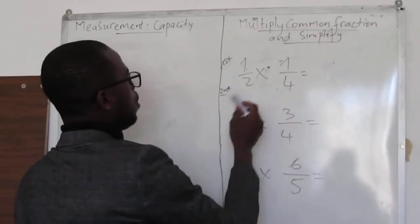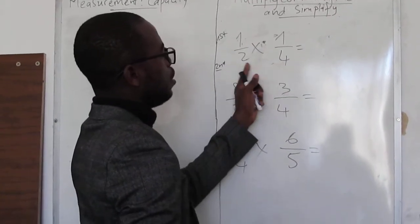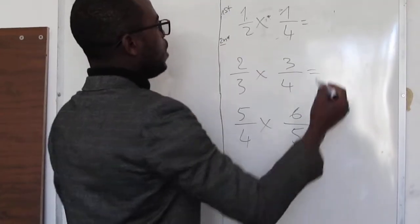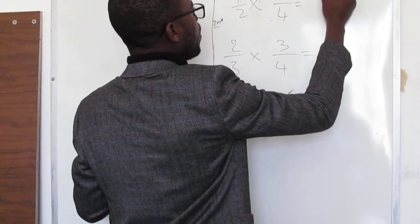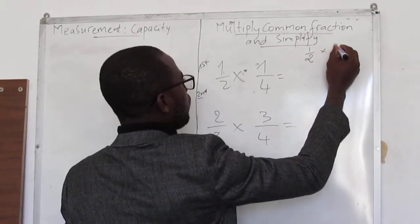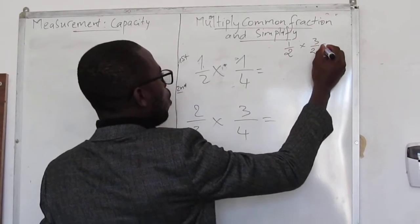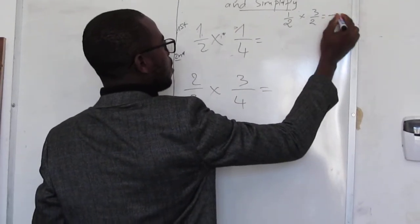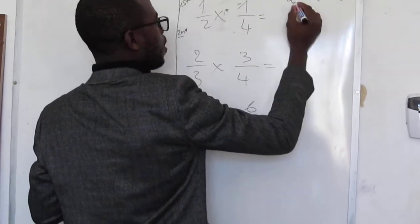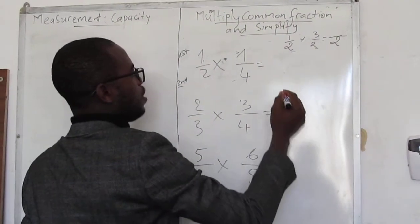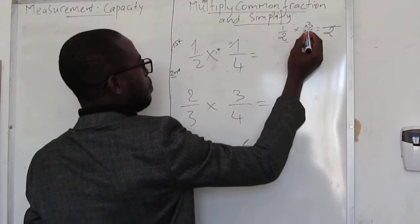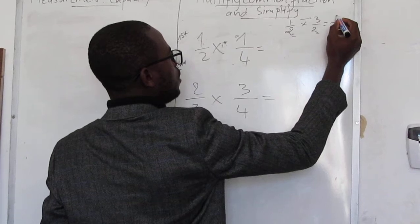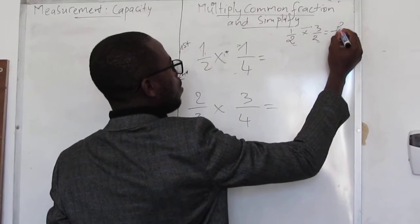We have different denominators here — the denominators are not common. So when the denominators are the same, for example 1 over 2 times 3 over 2, we keep the denominators as they are both 2. Then we just multiply the numerators: 1 times 3 equals 3.